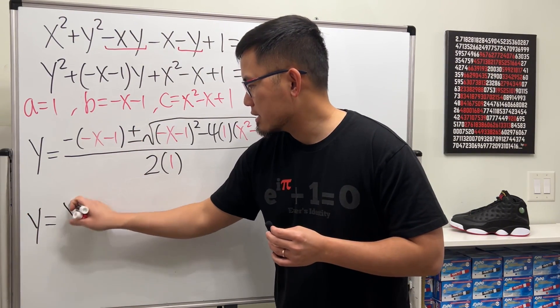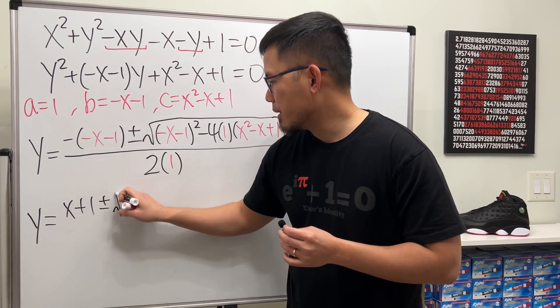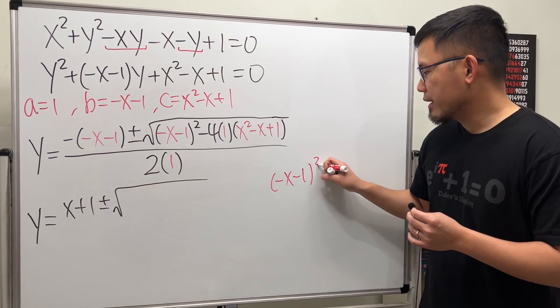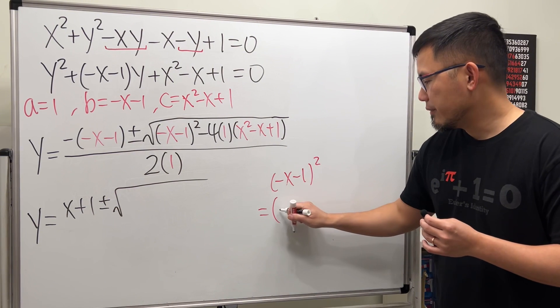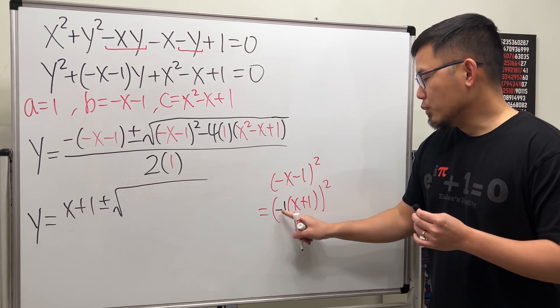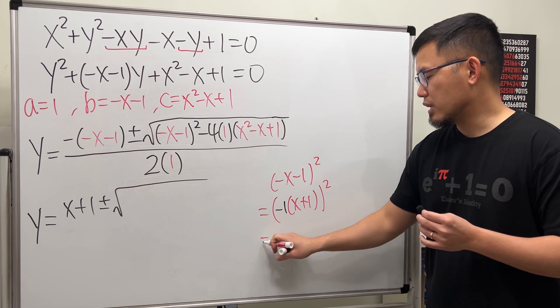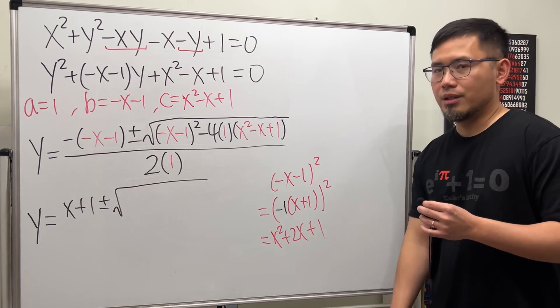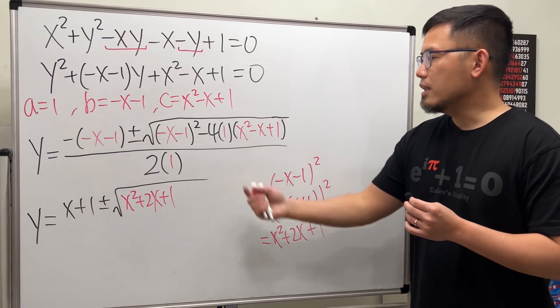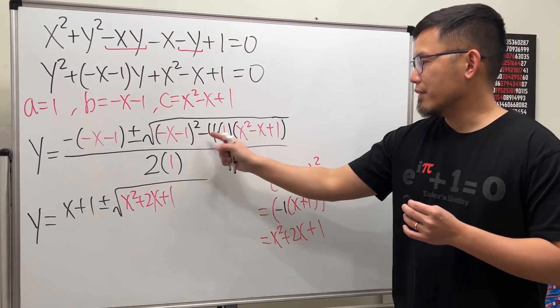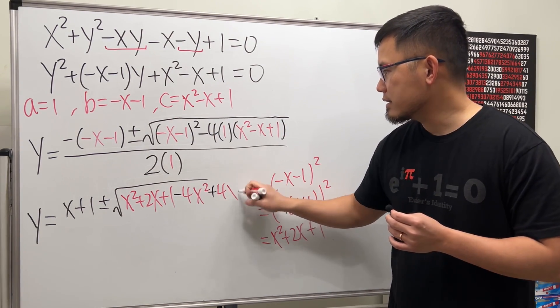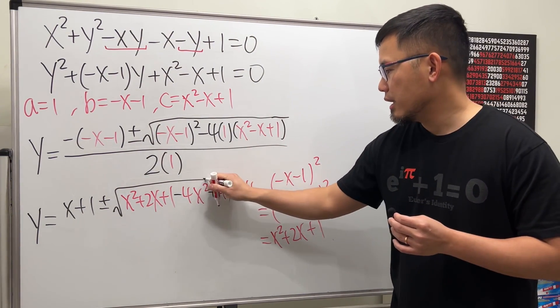Now clean things up a little bit. Y equals x plus one plus or minus, open the square root. For this right here, let's just multiply it out: negative x minus one. Don't let the negative bother you; you can actually factor it out like this: negative one and then x plus one and then square that. Negative one squared is just one, so you just square this to get x squared plus 2x plus one. Don't forget the 2x. So that's the first part: x squared plus 2x plus one. Then distribute negative four, so we have negative and then we have 4x squared, negative negative so plus 4x, so plus 4x, and lastly minus four. And then over two.